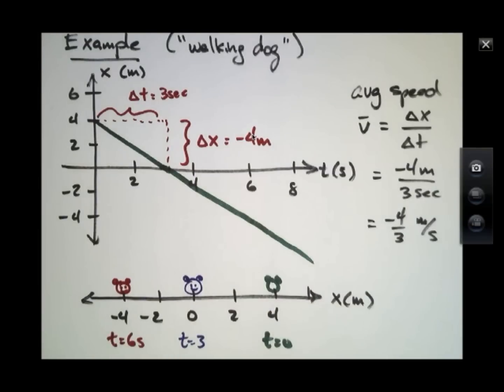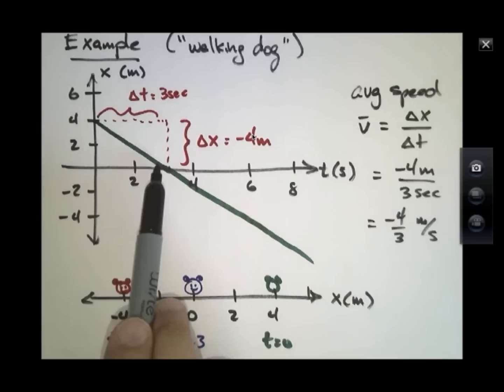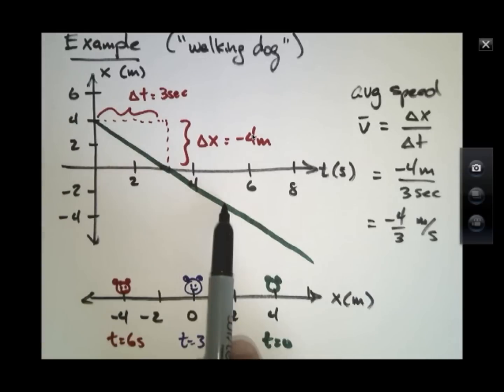Now it happens to be true that this is equal to the instantaneous speed at any point along this graph because the speed is constant all the way through. It didn't matter that I measured it right there. It could also be the speed right there or right there. So I could have picked any time interval.